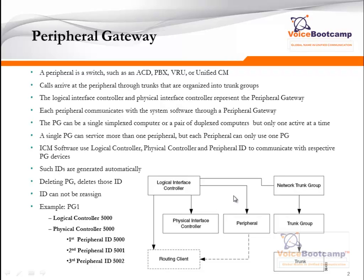A PG can be a simplex computer or a duplex — side A and side B. A single PG can service more than one peripheral, but each peripheral can only use one PG. ICM software uses logical controller, physical controller, and a router peripheral ID to communicate with the respective PG devices. Such IDs are generated automatically, and once deleted, they will not be available for reuse.